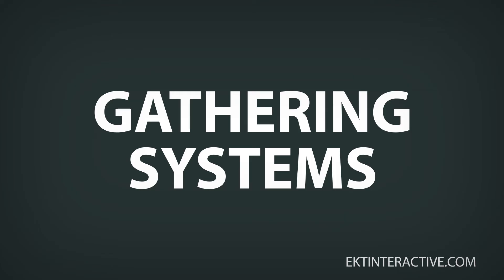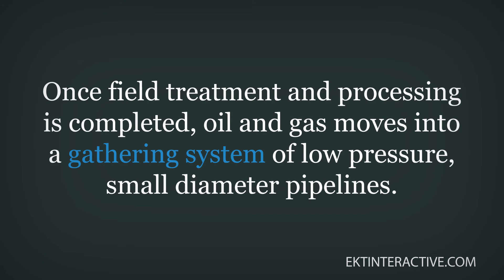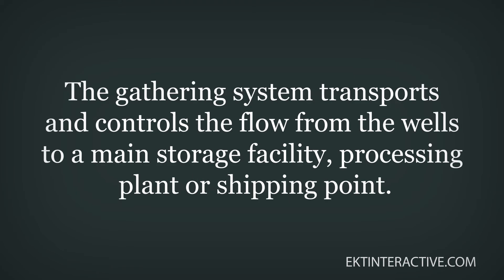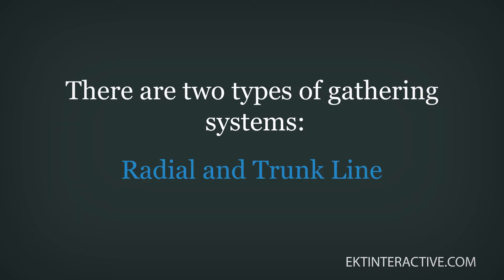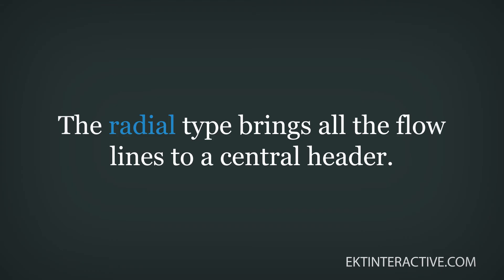Some of the needed gas processing can be done at or near the wellhead, and this is called field processing. However, the complete processing of natural gas takes place at a plant usually located in a natural gas producing region. We've addressed how oil and gas are separated, treated, and processed to get ready for sale — now let's discuss how the hydrocarbons are moved from the well site.